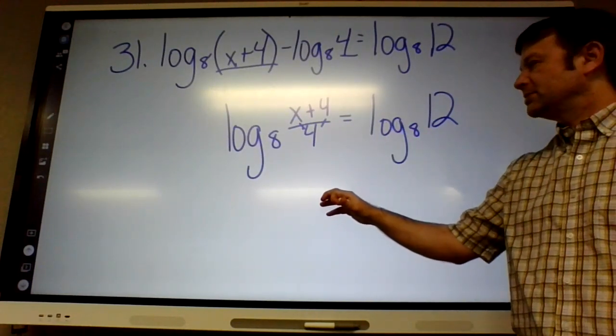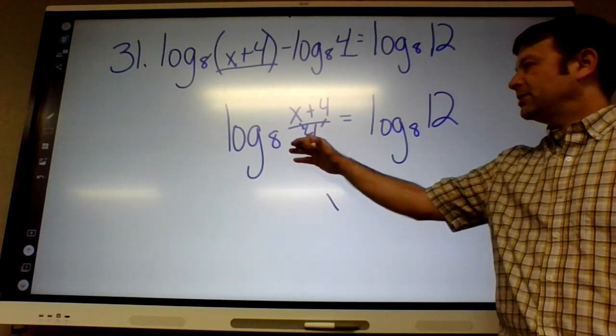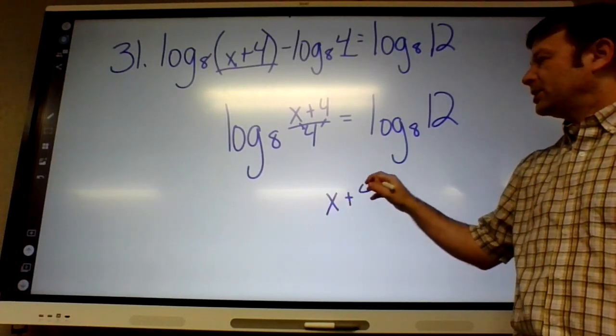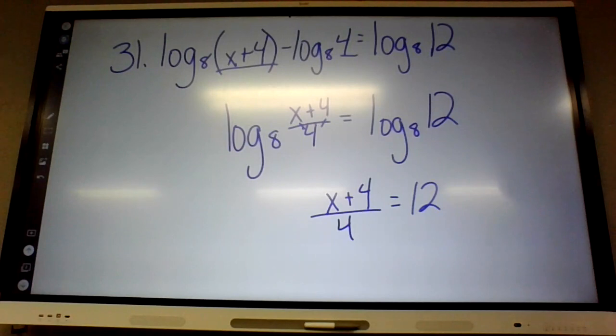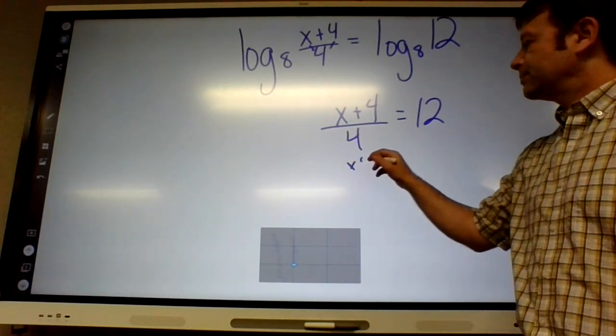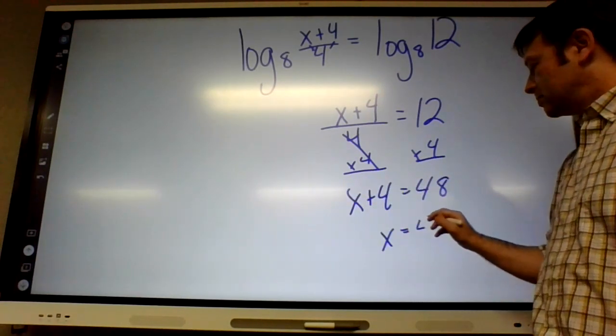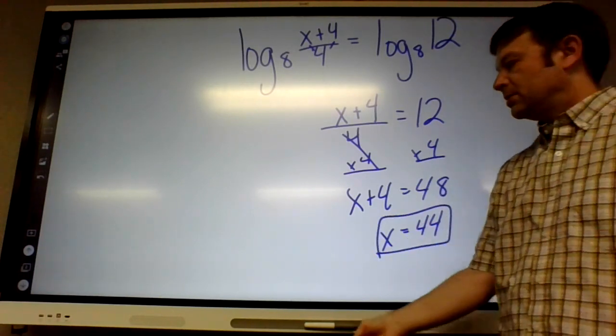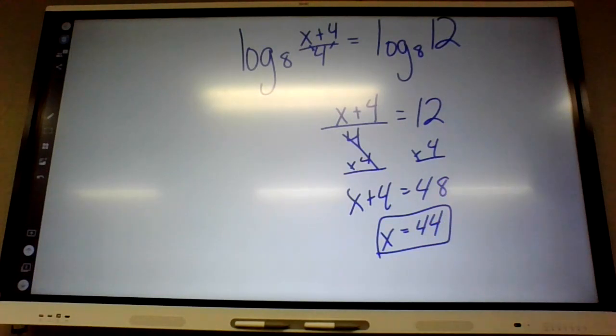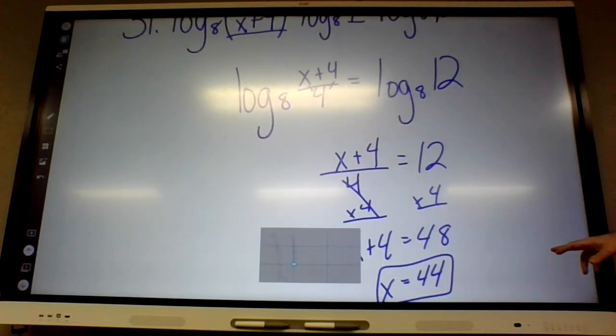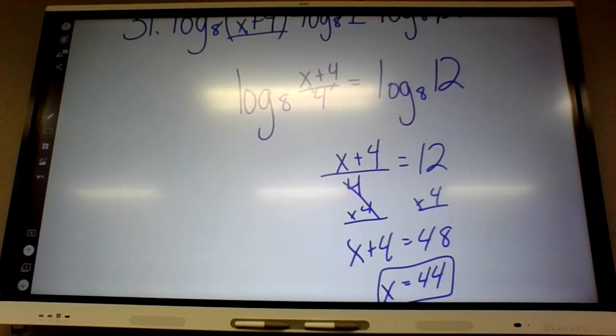What am I going to write next? I'm going to write the equation: x plus 4 over 4 must equal 12. Now we multiply by 4. So x plus 4 equals 48. X equals 44. Since these are equations, you could check them by plugging in both sides.